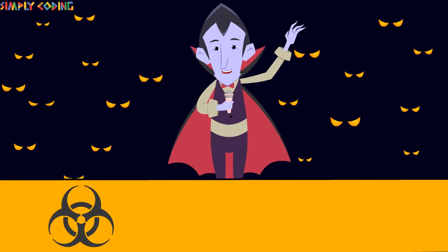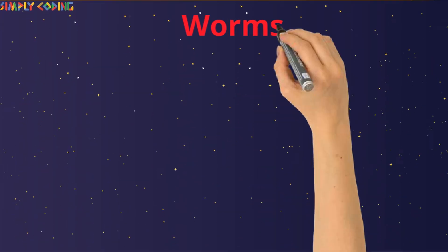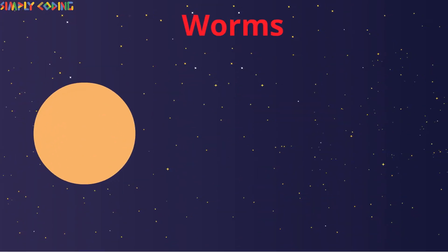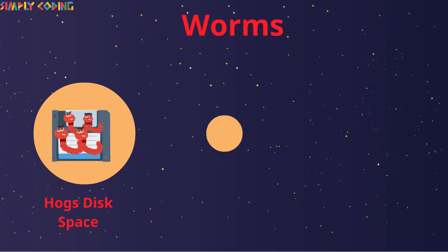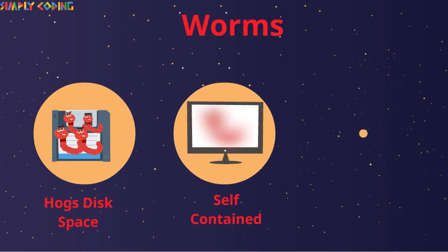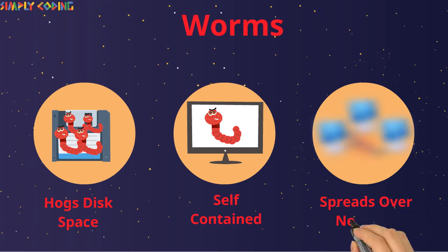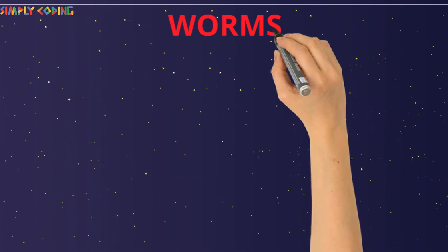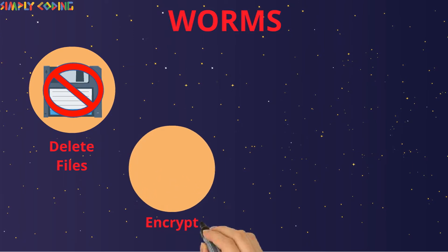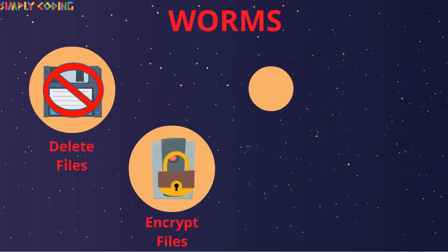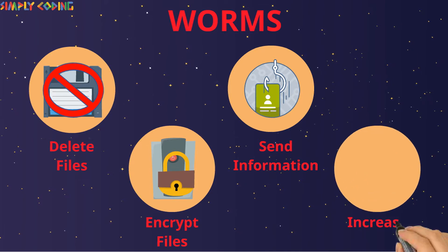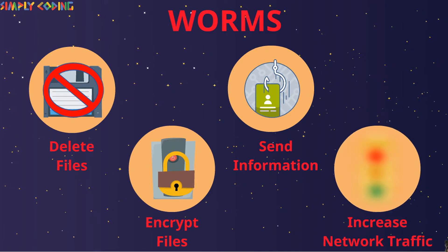A worm keeps on creating copies of itself until all the disk space or memory is filled. They are self-contained and do not require a host, and they can spread over a network. Worms can delete files in the host system, encrypt files or send information back to the attacker. They can cause major disruptions by increasing network traffic.